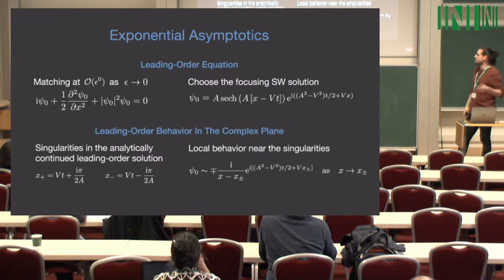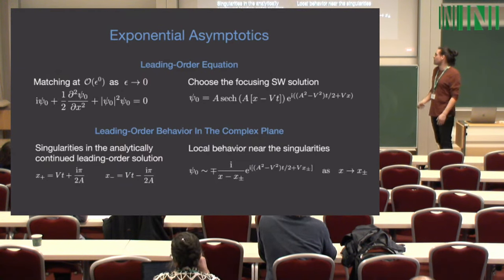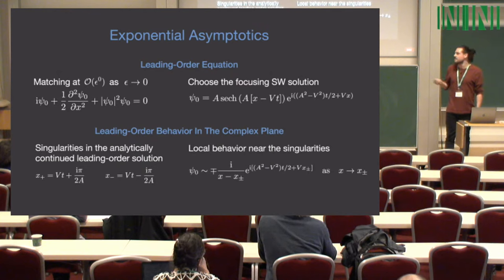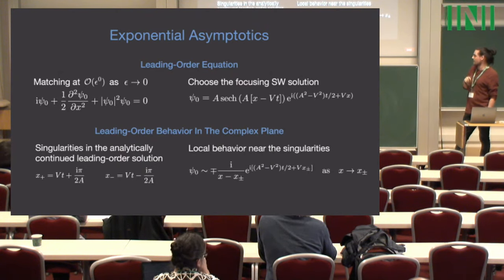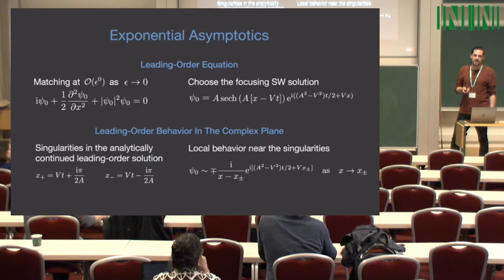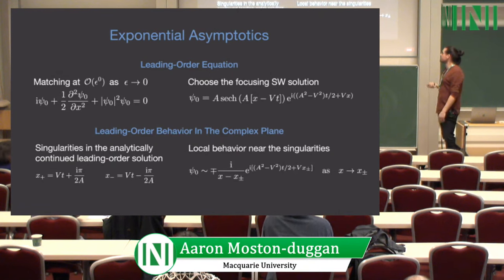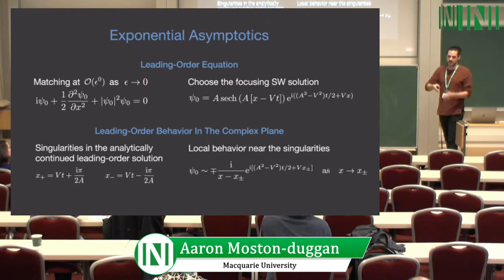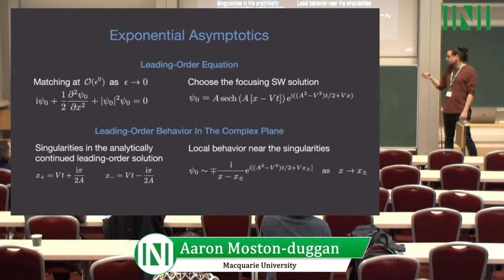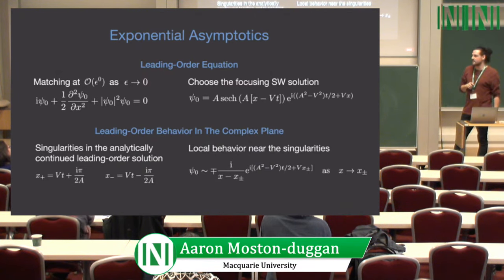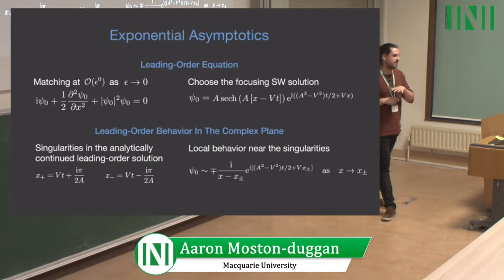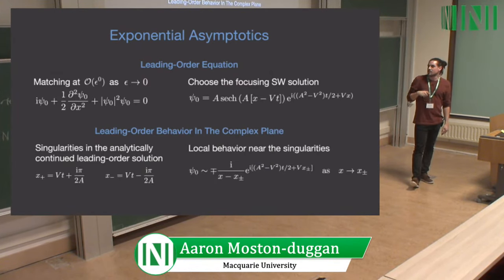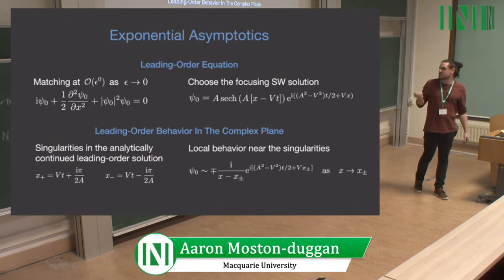To study generalised solitary wave solutions, we need exponential asymptotics to recover these exponentially small tails. We match at leading order — for all Karpman equations we consider, we always get the nonlinear Schrödinger equation at leading order, so the leading order term is set as the focusing solitary wave. For exponential asymptotics, we need to know about the analytically continued solution in the complex plane. We find a set of singularities that line up along the imaginary direction, centred around the wave core, and we need the local behaviour near those singularities closest to the real axis — labelled as the plus and minus solutions.